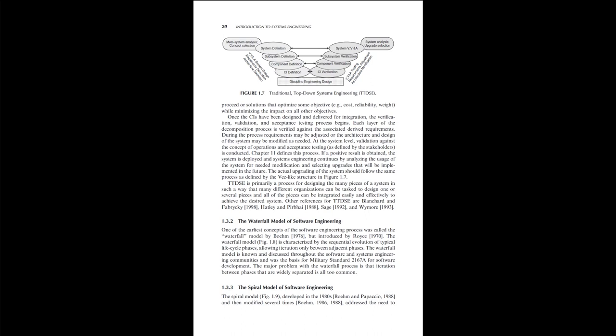Section 1.3.2: The Waterfall Model of Software Engineering. One of the earliest concepts of the software engineering process was called the Waterfall model by Boehm, 1976, but introduced by Royce, 1970. The waterfall model is characterized by the sequential evolution of typical life cycle phases, allowing iteration only between adjacent phases. The waterfall model was the basis for military standard 2167A for software development. The major problem with the waterfall process is that iteration between phases that are widely separated is all too common.